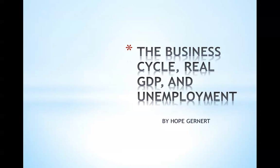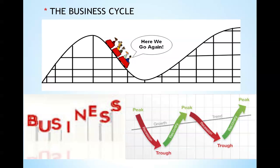The business cycle, real GDP, and unemployment. The business cycle refers to the ups and downs of an economy, similar to a roller coaster. The economy alternates between these upturns and downturns as measured by economic indicators.